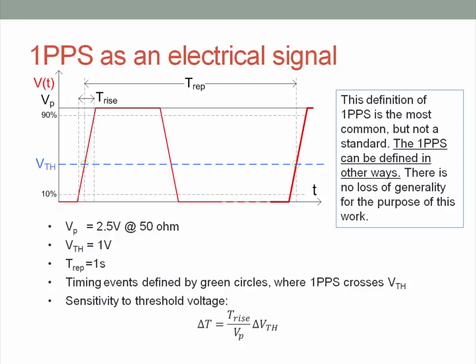So, what is for us a 1 PPS? A 1 PPS is an electrical signal going from 0 volt to 2.5 volt over 50 ohm, and you define the position of the timing events as the moment in which the signal is crossing the threshold of 1 volt. This definition is very common, but there are other definitions of the 1 PPS, and this is not impacting the final findings of this work.